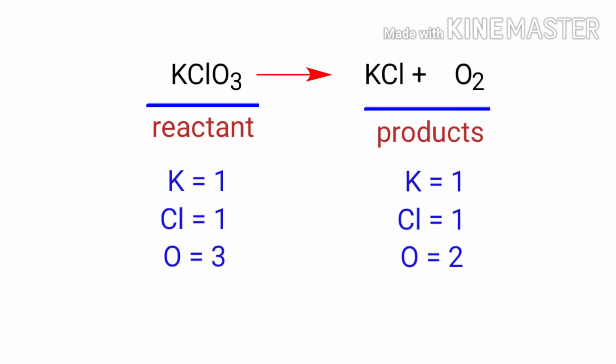In the reactant side, there are one potassium atom, one chlorine atom and three oxygen atoms. And in the products side, there are one potassium atom, one chlorine atom and two oxygen atoms. The number of atoms are not balanced on both sides.